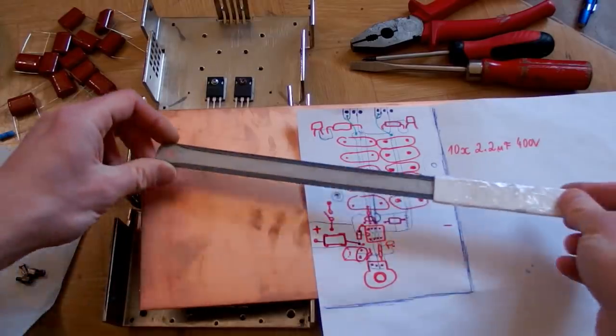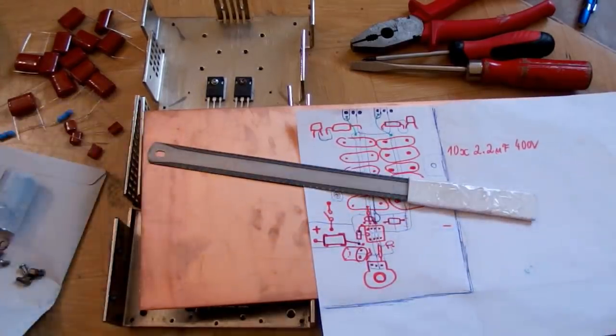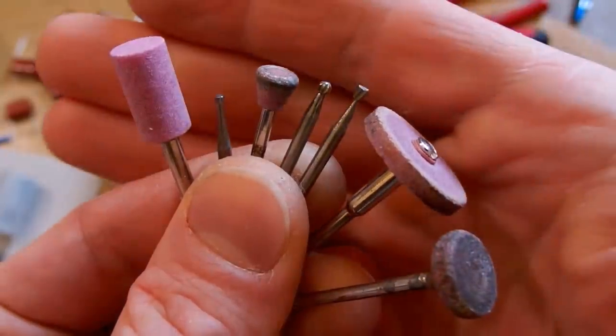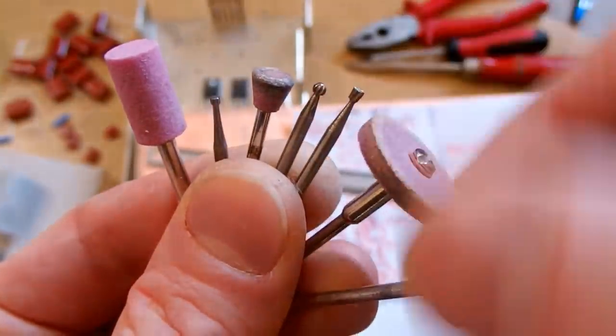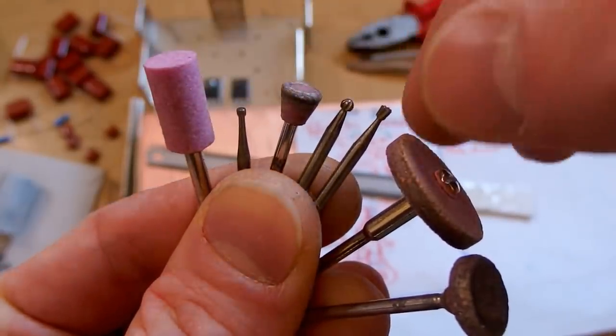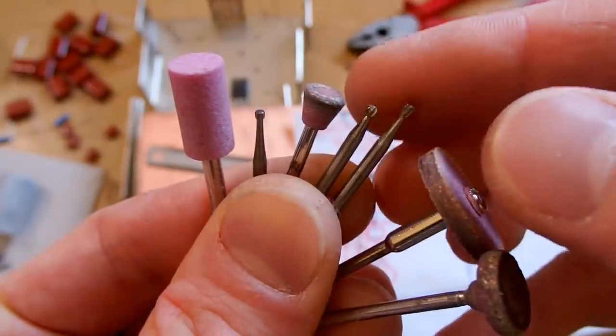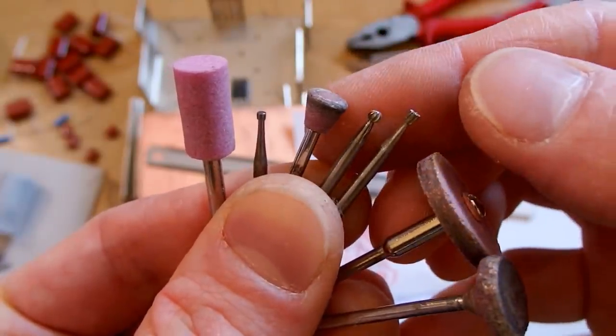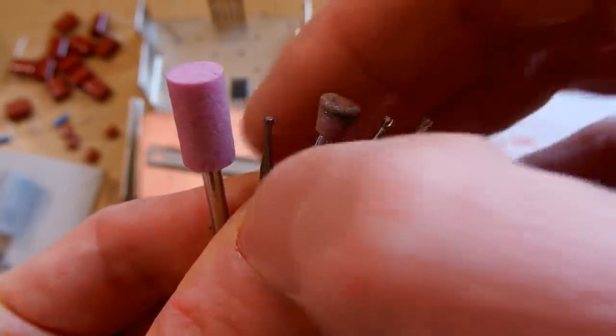But now let's start making the board. Let's cut it using a very crude saw and then let's cut the traces in the board using those bits for a mini drill. I basically put one of those into a mini drill and cut the traces. Some strange drill bits that look like dentist drill bits.